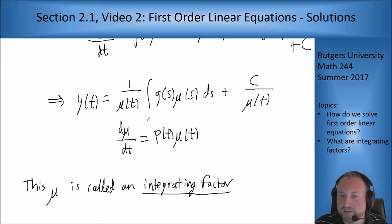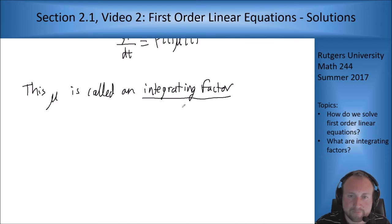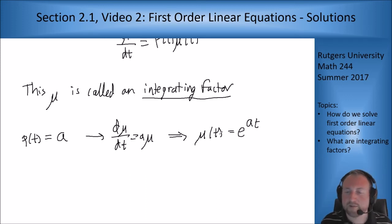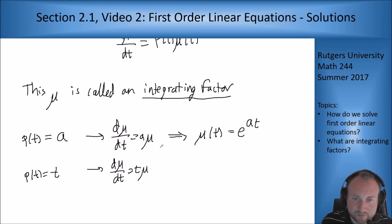Now if I have more simple situations, if I have a specific p, then I can solve things out more explicitly. For instance, if I have p of t is just a constant, this was one of the problems that was in the last video. If p of t is just a constant, then I get d mu/dt equals a mu, which has solution mu of t equals e to the at. In this place there would be a constant in front, but I don't care about the constant because it's going to cancel out at the end anyway. If I have p of t is t, you also solved this one last time. I have d mu/dt equals t mu, which gives me that mu of t is e to the t squared over 2.